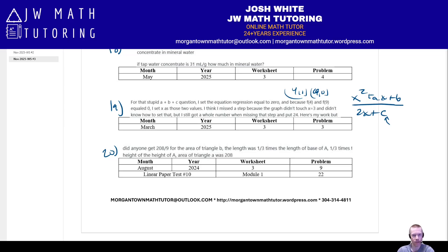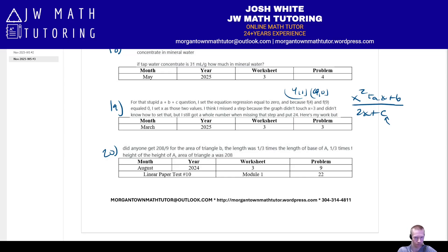Number twenty: you're given the area of one figure and told that the length of each side of a smaller figure is some fraction or percentage of the sides of the larger one. You use the scale factor — the one-dimensional relationship — and square it to get the area factor, then find the area of the small or large figure. Check out the two examples on screen: one from August 2024, and one identical to a problem on linear paper test number ten.